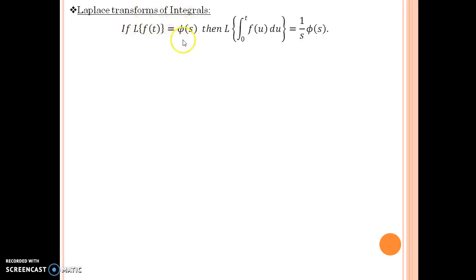Now the statement is given in this manner and it says, if you have Laplace of f of t equals phi of s, then Laplace of integral 0 to t f of u du is given by phi of s upon s. There is a general version to this statement that says, if there are these n integrals and if you take Laplace of these n integrals operated over this particular function, then the net effect is 1 upon s to the power n phi of s.